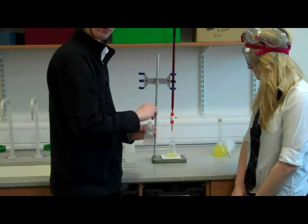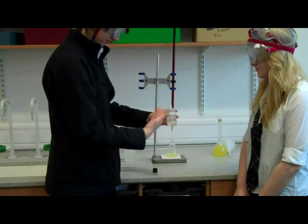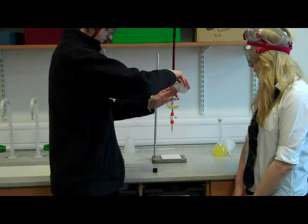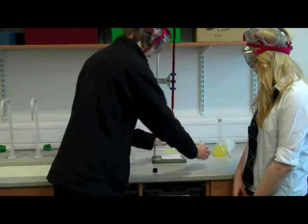Step 6. Using starch solution as an indicator, begin to drain iodine solution out of the burette into a conical flask until the solution stays black.